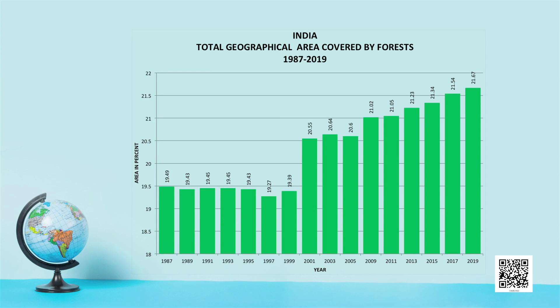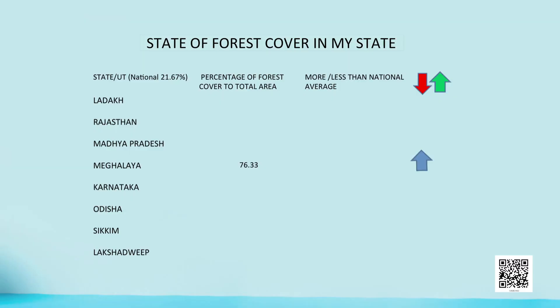The apparent growth in forest cover after 1999 may be due to plantation by different agencies, since forest reports do not distinguish between natural forest and plantations. You can find out the status of forest cover in your own state or UT. One student from Meghalaya reports her state has 76.33 percent area covered by forest, which is more than the national average.